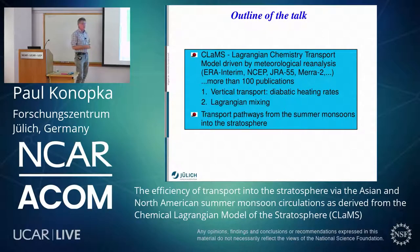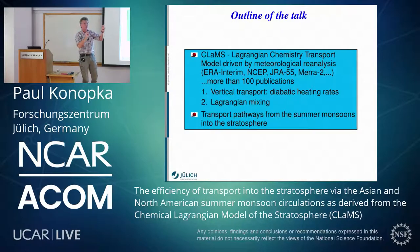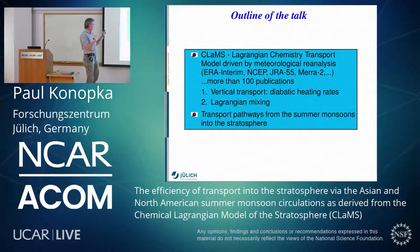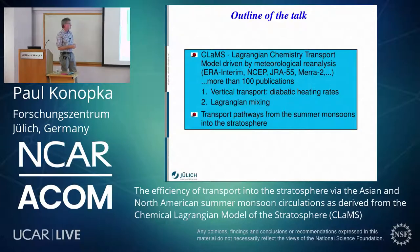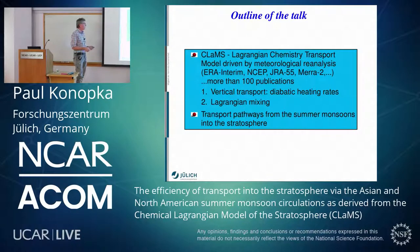The second point is Lagrangian mixing. It is very unique in CLAMS. You can imagine if you follow trajectories of your air parcels and you want to mix these air parcels, it's something challenging. Then I will jump to the recent application of the model — the analysis of the transport pathways from the summer monsoon into the stratosphere.